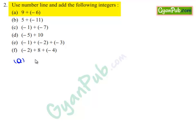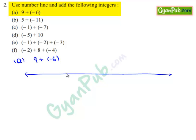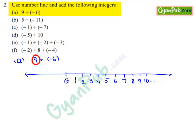Take down part A: 9 plus minus 6. To add the given integers 9 and minus 6, we are using a number line. On the number line, 0 is the middle value. Right side of 0 are 1, 2, 3, 4, 5, 7, 8, 9 and 10 and so on. First, we will move 9 steps to the right of 0. Then we reach plus 9. Mark plus 9 on the number line. And we add minus 6.